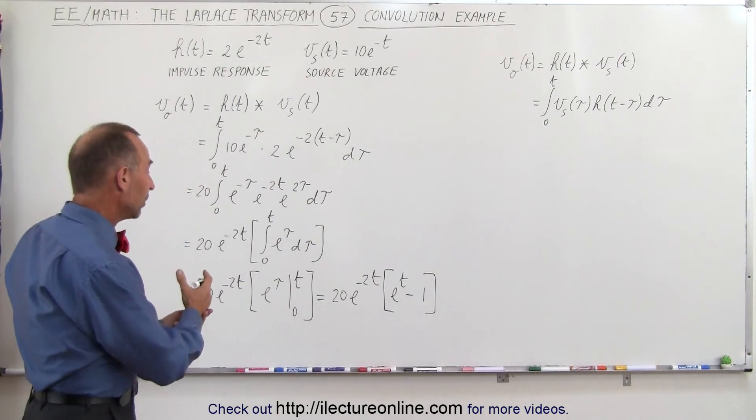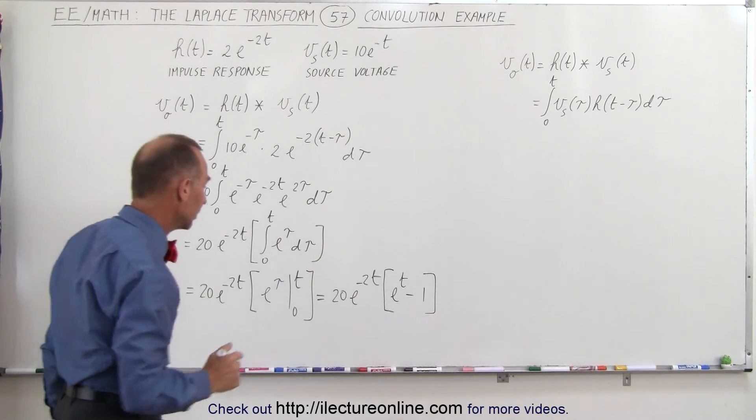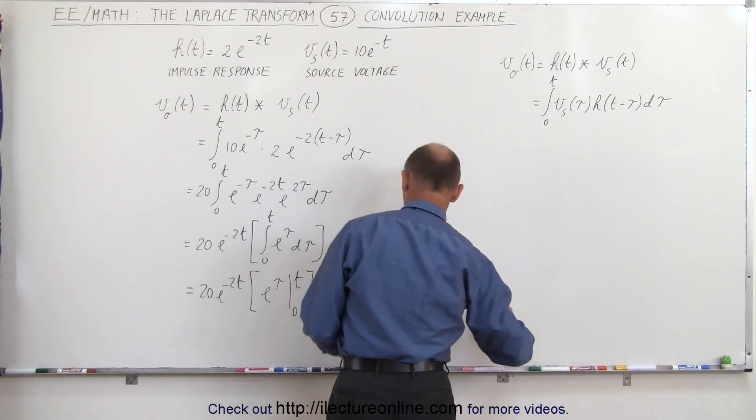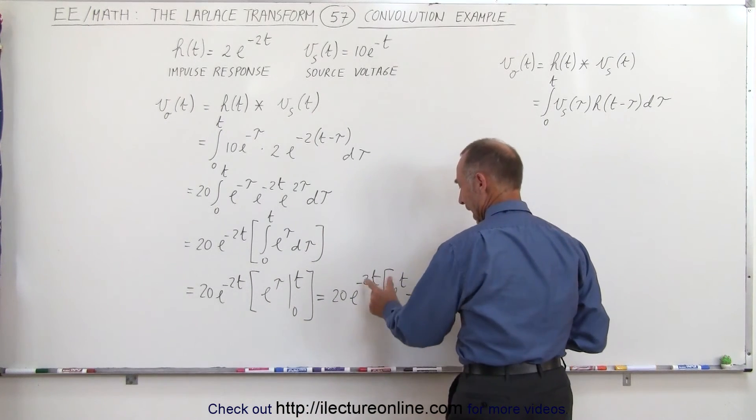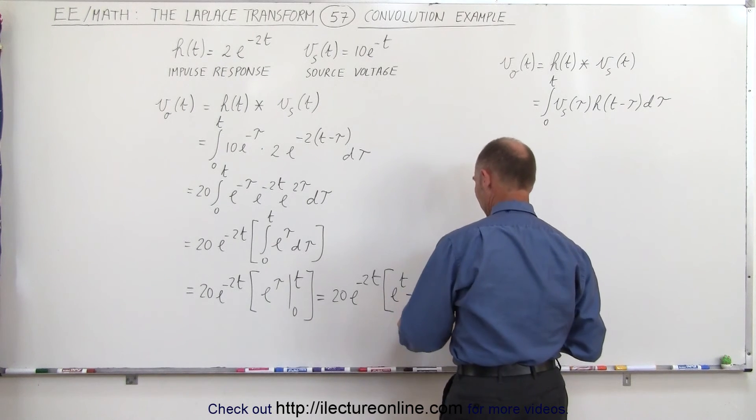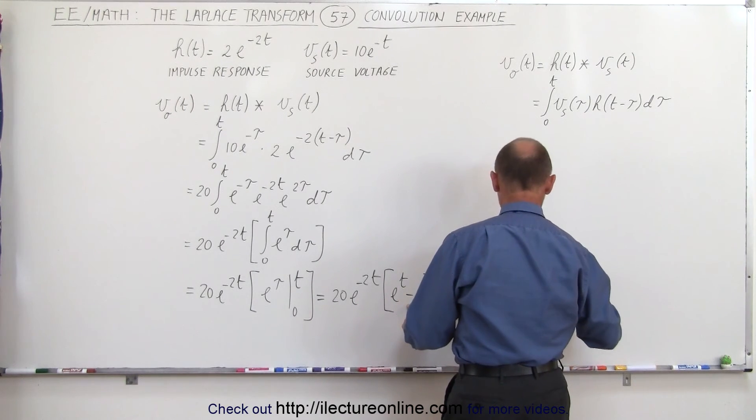Now we can multiply e to the minus 2t into that expression and we get the following. This would be equal to 20 times, when we multiply these two together, we add exponents, that's e to the minus t, and then this times this is minus e to the minus 2t.